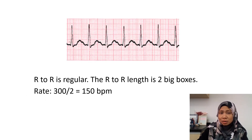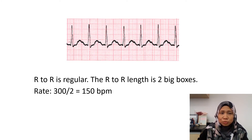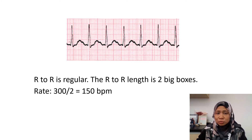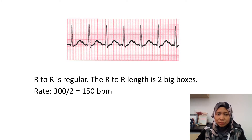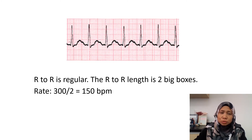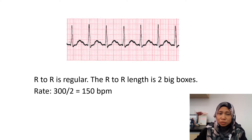Looking at this ECG strip, the RR interval is regular — the duration from one R to the next R and from that R to another R is the same. The R-to-R length is about two big boxes. So the rate is 300 divided by 2, which equals 150. In 300 big boxes we would expect to see 150 R waves, giving us 150 beats per minute.